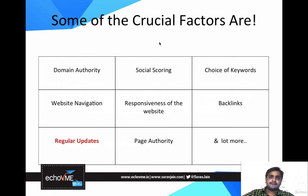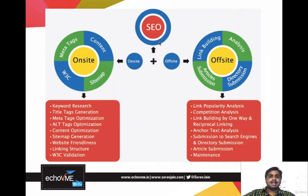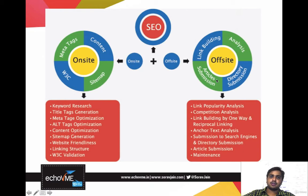SEO is a two-phase process: on-page and off-page, also known as on-site and off-site. On-page factors include content, meta tags, W3C validation, sitemap, and many other things. Off-page is about link building — how many articles you submit on different sites, guest posts, submitting on directories, participating in forums, commenting on blogs, and ensuring you get visibility and publicity of your content on search engines.